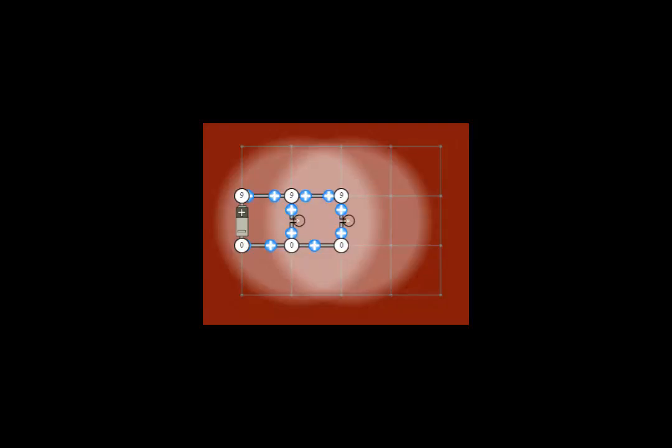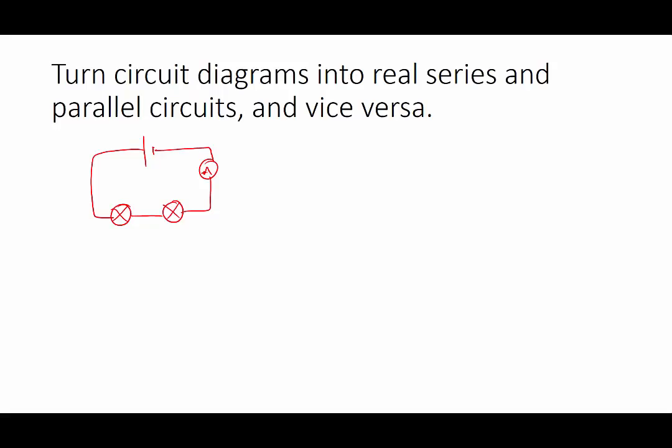A parallel circuit here, we've got two bulbs and a battery in parallel. So we're going to have to draw in the two separate loops. Again, we start off by drawing our cell or battery, and then we draw the rest of the first loop. We always draw the inner loop first, and then we add in the extra outer loop, and we can do that for as many loops as we need to.